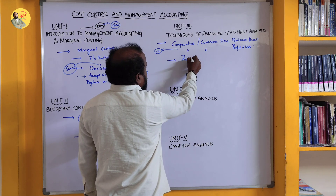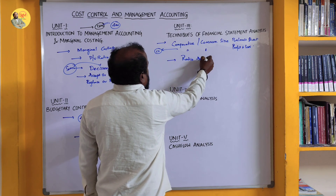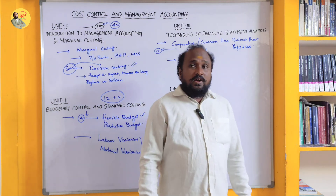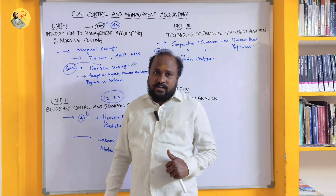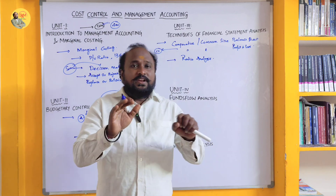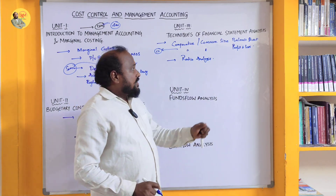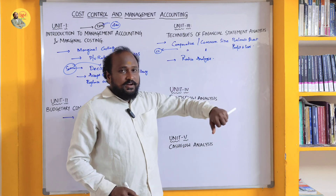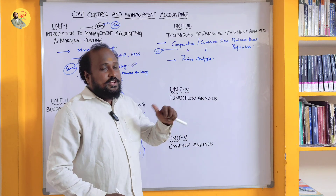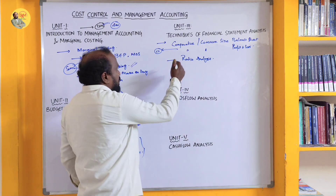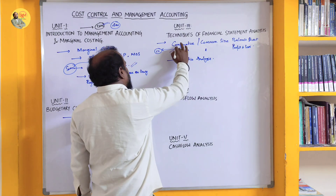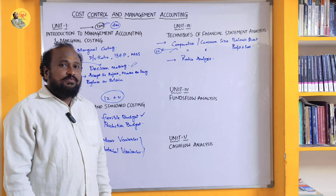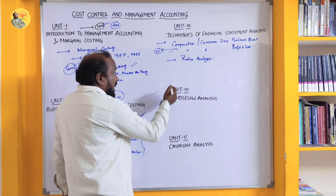The other option in this chapter is Ratio Analysis. Students who are very good in accounts and know the formulas can go with Ratio Analysis. However, if you're not confident with formulas and their application, it is risky. According to me, go with Comparative or Common Size Statement, because a sure 12-mark question comes from that, and possibly 4 marks also — so 16 marks from this unit.